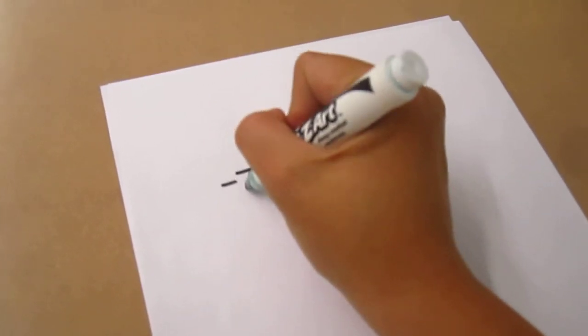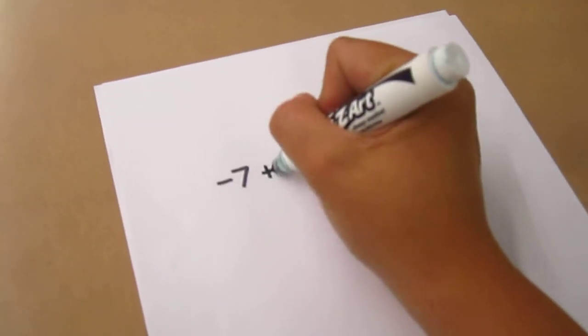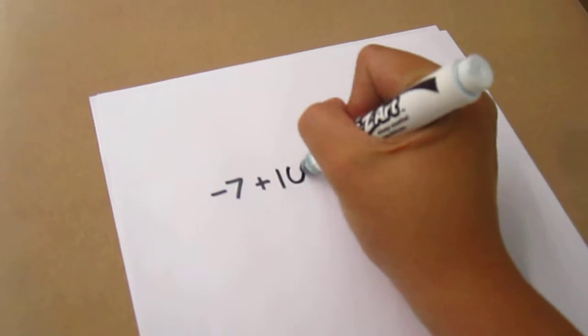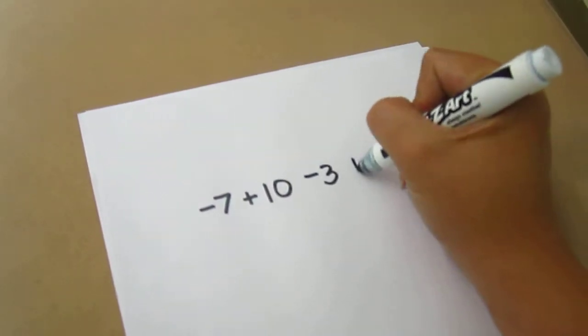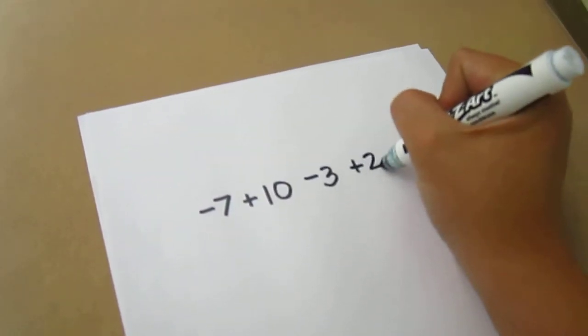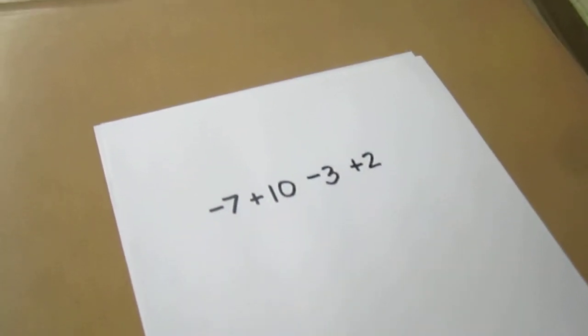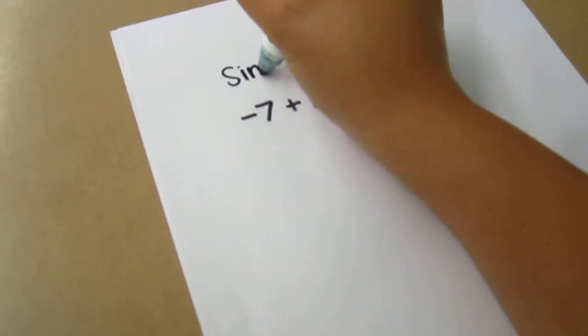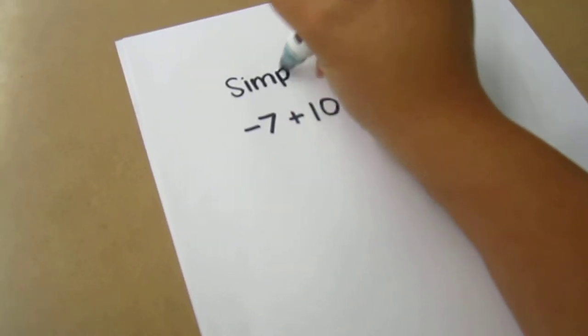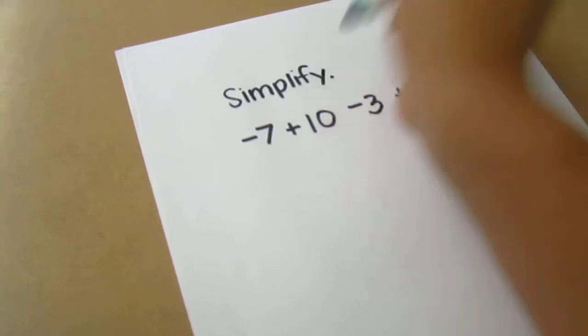The first example I'm going to show you is negative 7 plus 10 minus 3 plus 2. I'm first going to start with simplifying this expression using a method we call drawing integers.